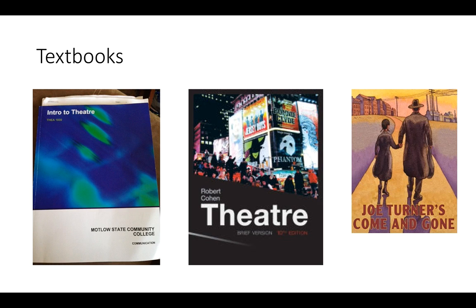We also have a supplementary text, which is Joe Turner's Come and Gone by August Wilson. I do ask that you get ahold of that book — you're going to need it to write your paper. As for what edition or version, it doesn't matter to me. They all have the same act and scene numbers, which is how you'll reference it. Any edition is fine; it can be part of a compilation of August Wilson's books. Whatever is the cheapest way you can find it is fine with me. So you have two textbooks: the Cohen Theater brief version, and Joe Turner's Come and Gone.